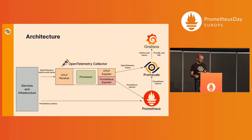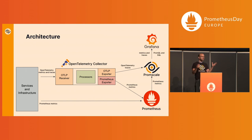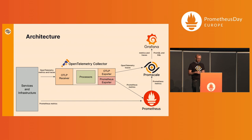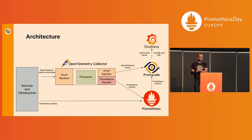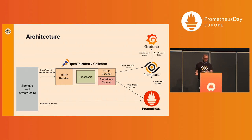Most of you will probably end up having data generated using those two standards. So how do you correlate the data together? Before I start, I just want to paint a picture of what a high-level architecture of this system would look like. You have your services and infrastructure generating Prometheus metrics, which go into Prometheus and also into PromScale, which is a long-term storage for Prometheus. Then as you start adopting OpenTelemetry as well, you'll have metrics and traces that come from OpenTelemetry, and OpenTelemetry doesn't have a backend — you have to store it somewhere.